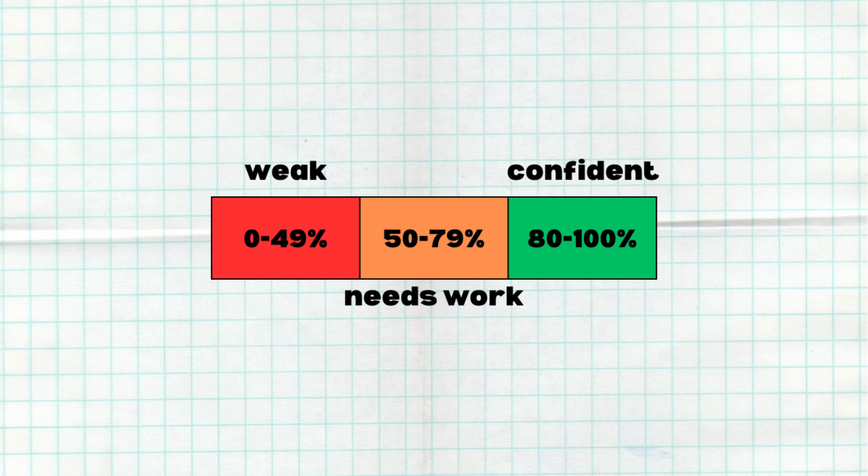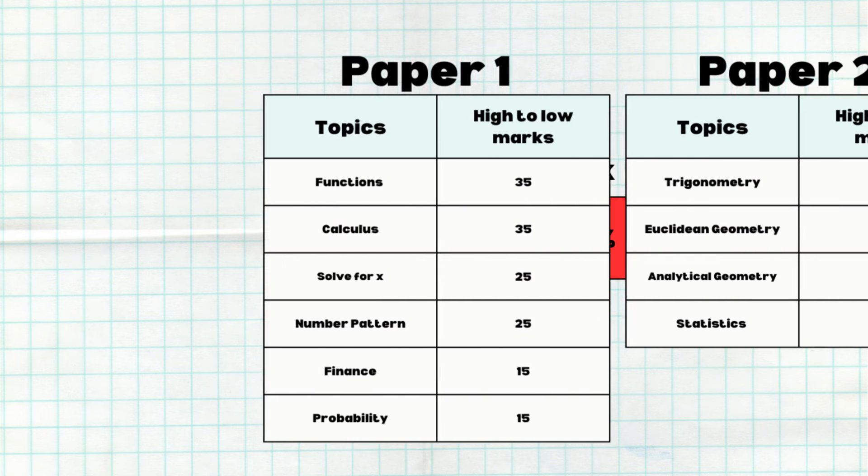Red for the topics that you scored the lowest in. Orange for topics that you need some improvement but aren't as bad. Green for topics that you are confident in.